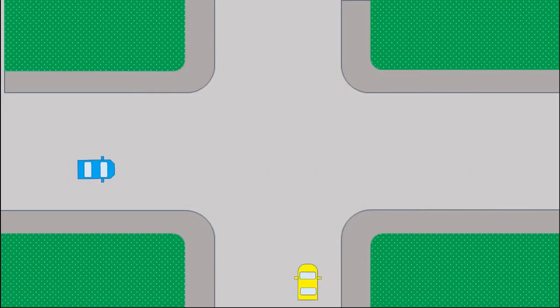So, as we can see in this example, the blue car must yield to the yellow car because the blue car is on the left of the yellow car. Pretty simple, right?